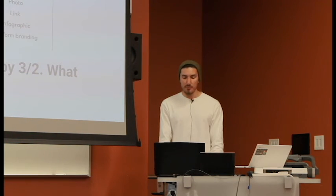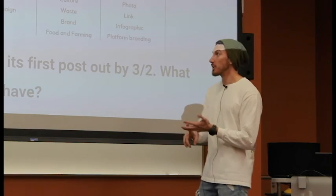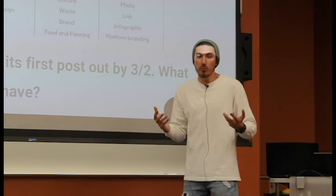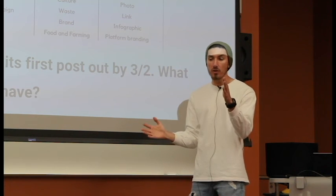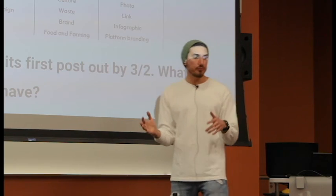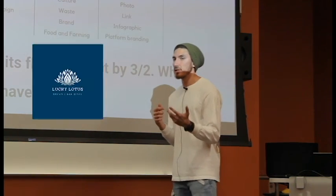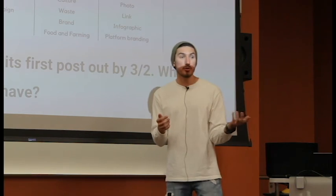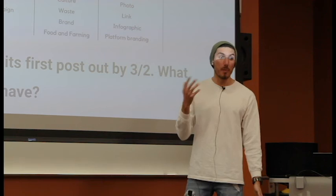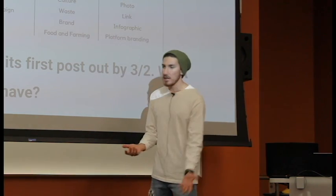Here's our last team activity. Get out a piece of paper. We have here from Bulls Farming: objectives — what outcome we want, either expand reach, get a share, or make them feel something. Categories: promotional — just repping yourself; temporal — a holiday or something; campaign — your large-scale content objective. For example, Lucky Lotus Lounge: their campaign at the end is probably to separate themselves from all other restaurants in that cuisine and make their name the number one that comes to mind.